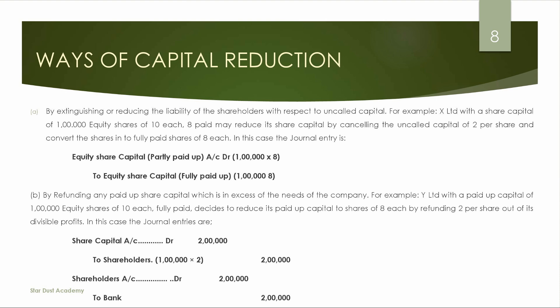A company is permitted to reduce its share capital under Section 66 of the Companies Act in three ways. The first way is by extinguishing or reducing the liability of shareholders with respect to uncalled capital. For example: a company has a share capital of 1 lakh equity shares of Rs. 10 each, Rs. 8 paid-up. It reduces share capital by cancelling the uncalled capital of Rs. 2.